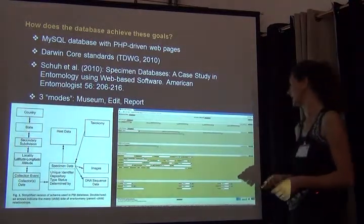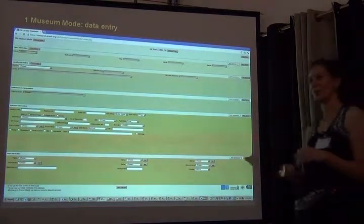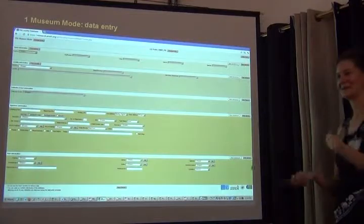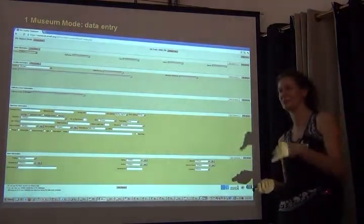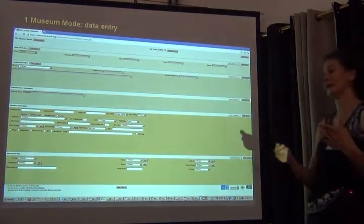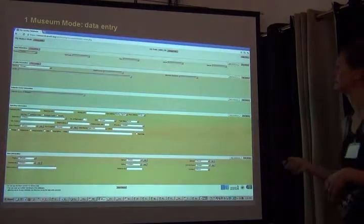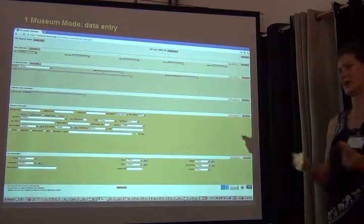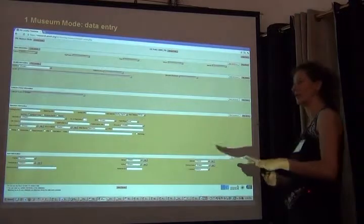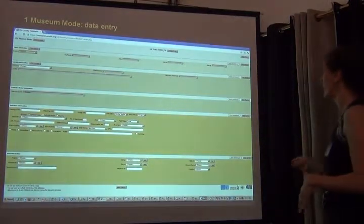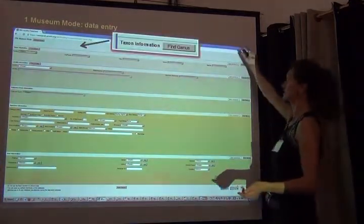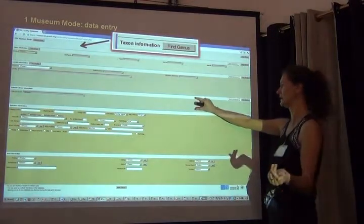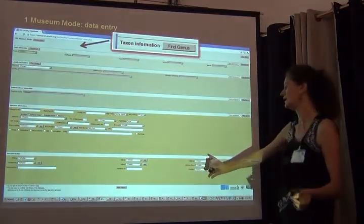This is what the first page of the database looks like. One thing I really like about it is it's a one-page design — you don't have a lot of different windows open at the same time. Typically when we do data entry we have two windows open. It's a very simple, well-organized design. We have taxonomic information on top, locality information, collection event information with collector and date below it, then a bigger section on specimen information, and down below the host information.